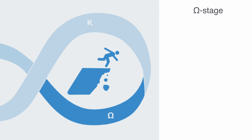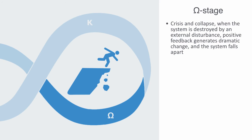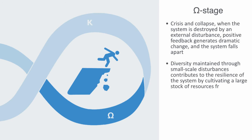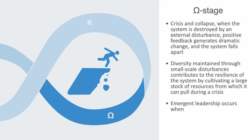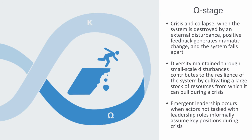The Omega stage is one of crisis and collapse. When the system is destroyed by an external disturbance, positive feedback generates dramatic change and the system falls apart as it is pushed out of its stability domain. The test of a system in the Omega stage is its capacity to survive in the face of extreme disturbance or disordered collapse. A system must maintain vital functionality throughout the crisis. In human organization, it is often up to leadership — both assigned and assumed — to identify and prioritize what this means. One of the ways that diversity maintained through small-scale disturbances contributes to the resilience of the system is by cultivating a large stock of resources from which it can pull during such a crisis. Emergent leadership occurs when actors not tasked with leadership roles informally assume key positions during crisis. Failure to survive this stage can result in a complete breakdown of the system cycle.